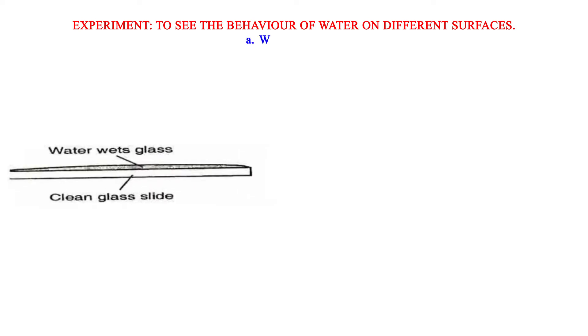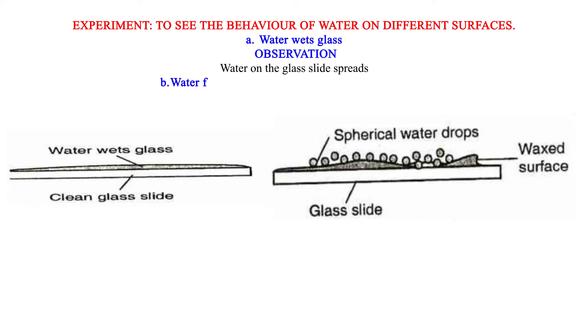Experiment to see the behavior of water on different surfaces. A. Water wets glass. Observation: Water on the glass slide spreads. B. Water forms spherical water drops on waxed surface. Observation: Small spherical balls were observed on a waxed glass.